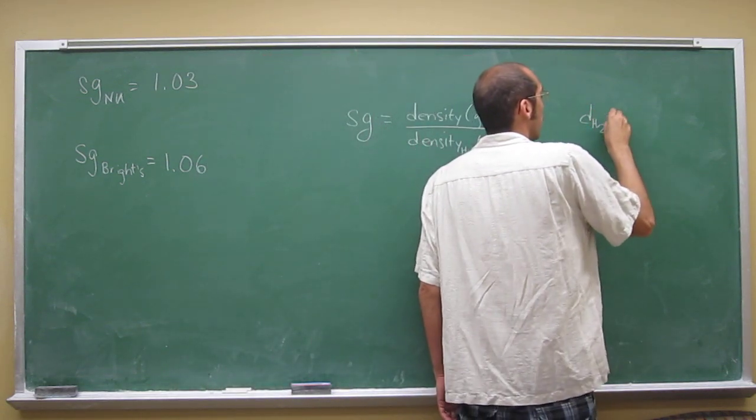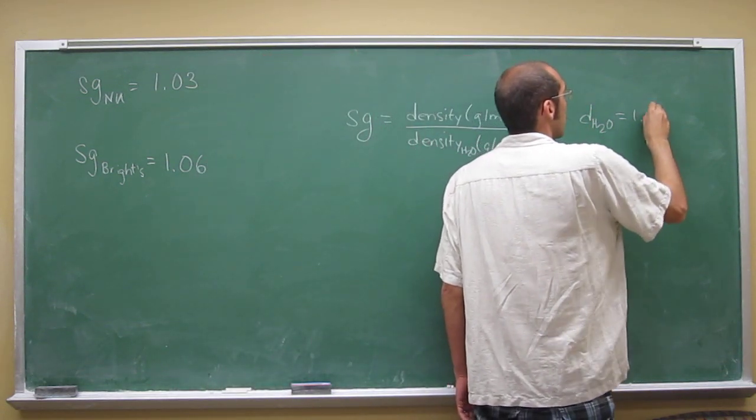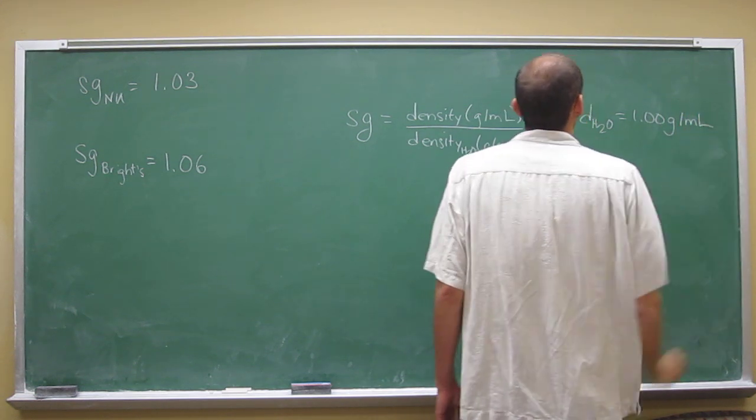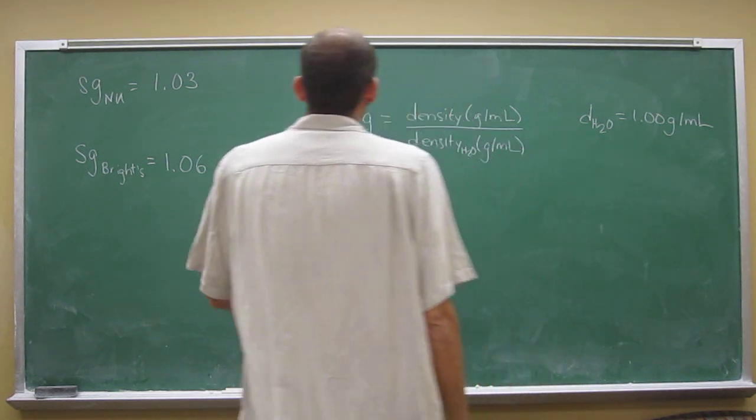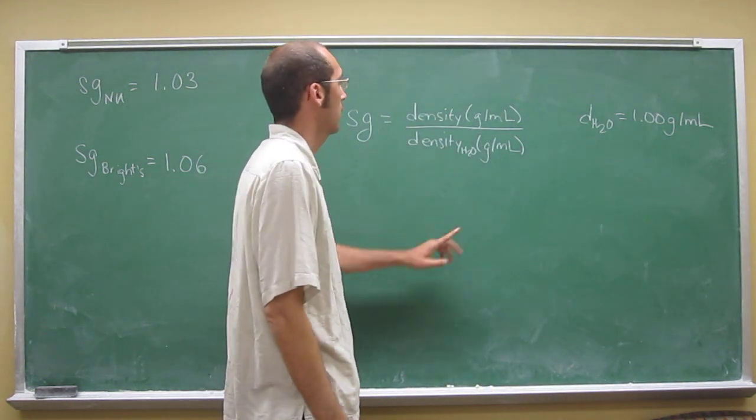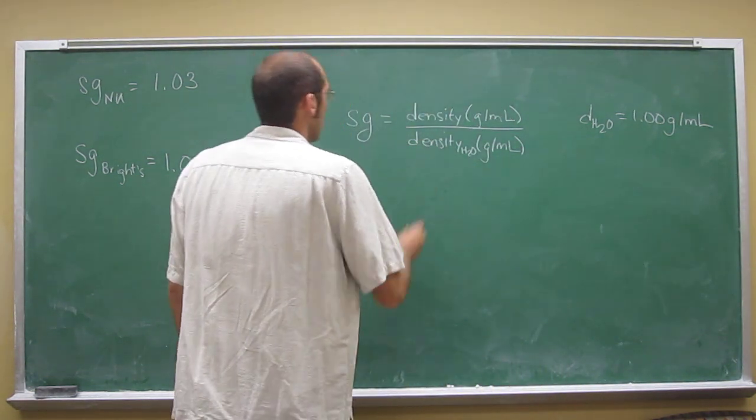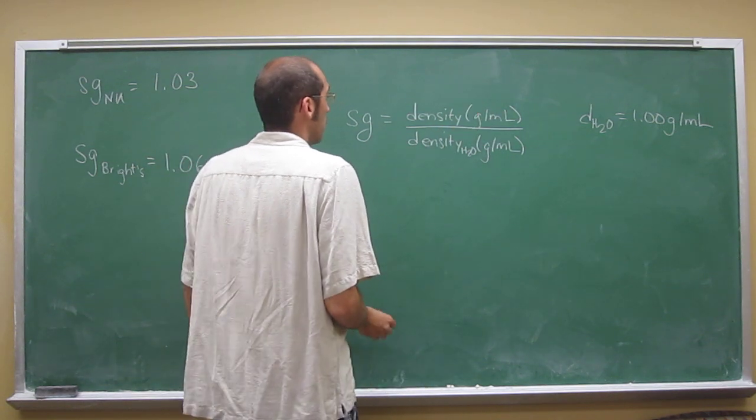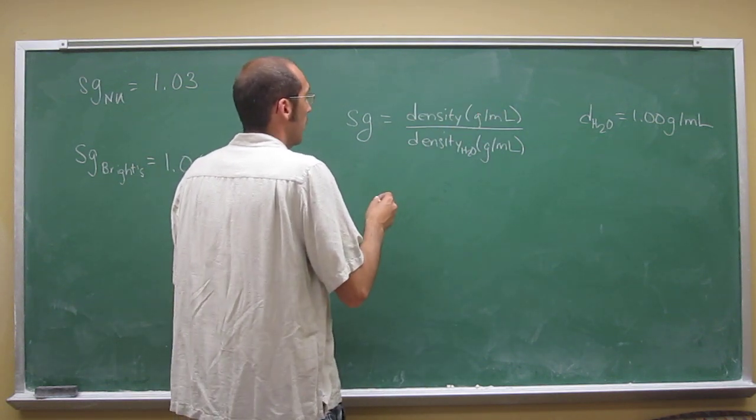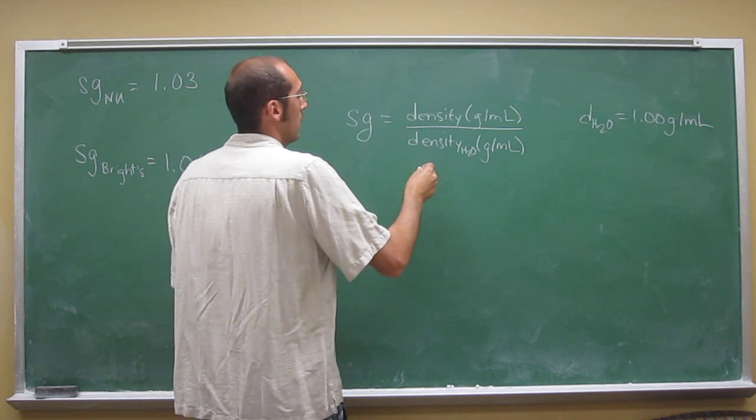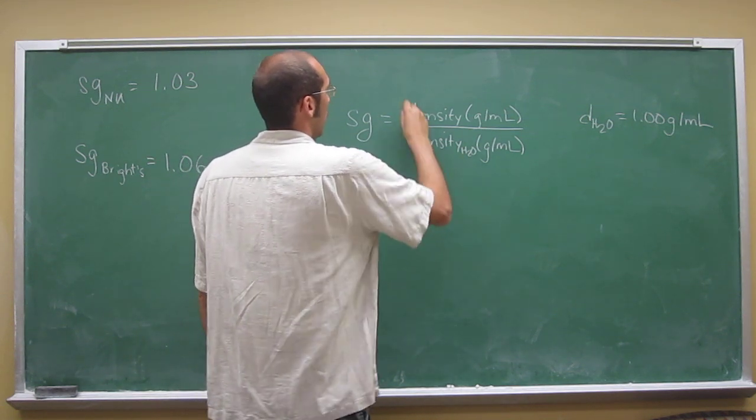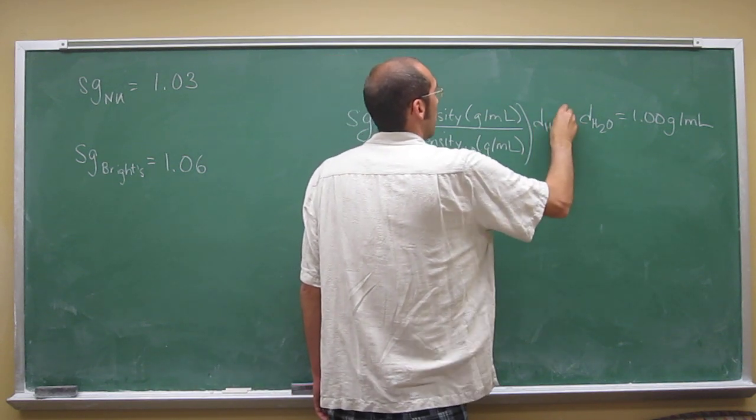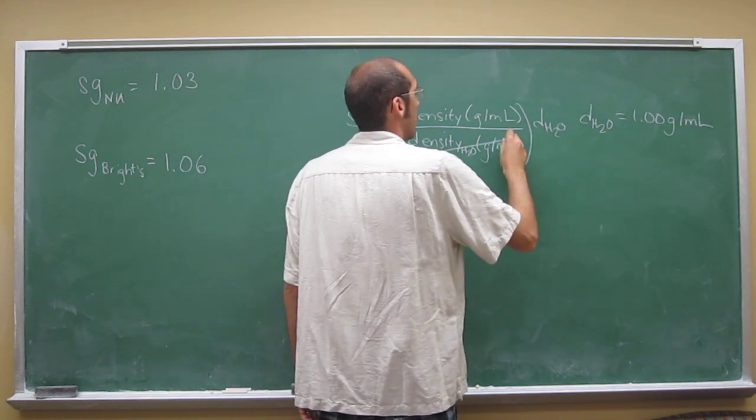The density of water at 4 degrees Celsius is 1.00 grams per mil. If you know the specific gravity and the density of water, you just rearrange this equation to figure out the density of the two samples. To do this, multiply both sides by the density of water, and that'll cancel that out.